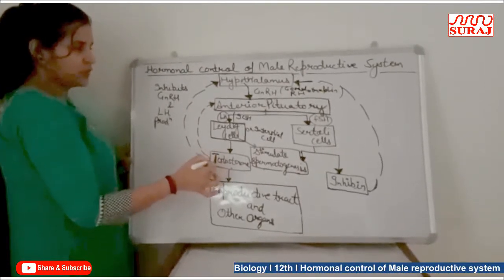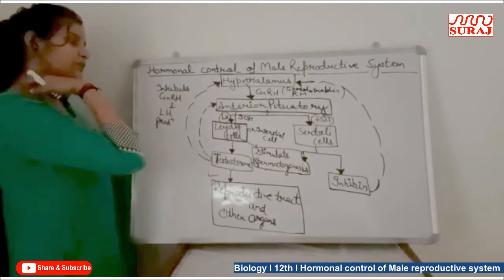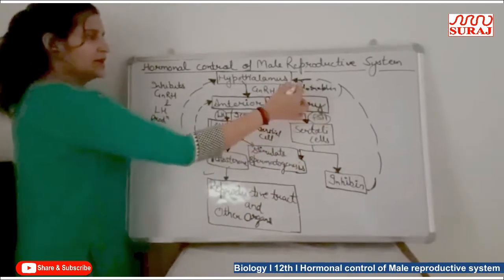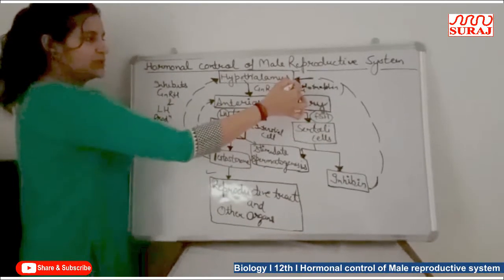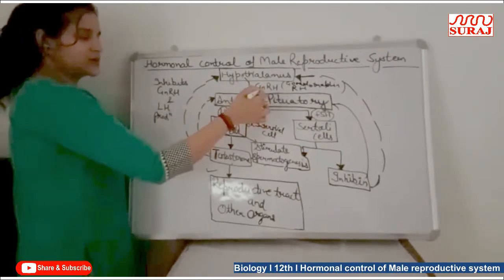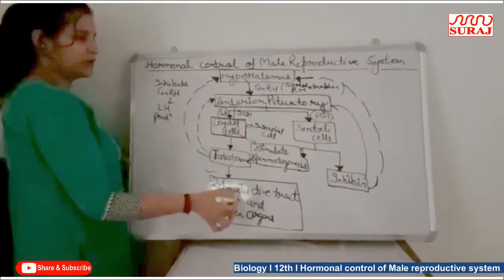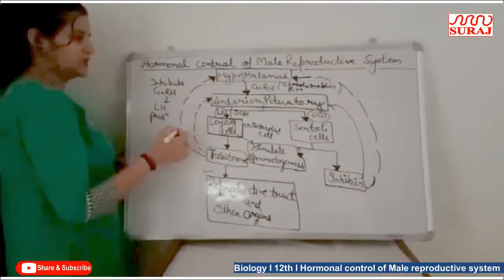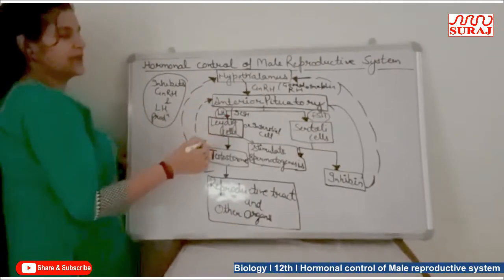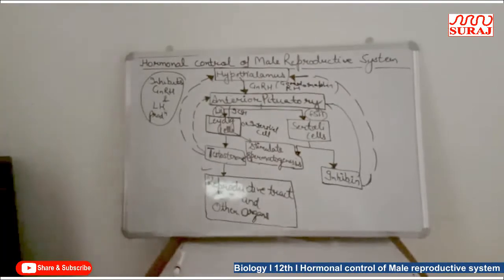Maximum amounts of these hormones produce a positive feedback inhibition on the anterior pituitary and hypothalamus. Additionally, Sertoli cells produce a glycoprotein called inhibin, which also suppresses the anterior pituitary and hypothalamus, stopping further hormone regulation. In normal conditions this is called negative feedback control, while the inhibition of gonadotropins LH by excess testosterone is the positive feedback inhibition. Together, this whole system is known as hormonal control of the male human reproductive system.